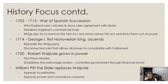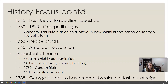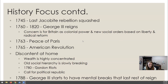Walpole refuses to go to war again against France and Spain, and in 1742 he falls out of favor. He is succeeded by William Pitt the Elder, who appeals to everyone's patriotism and expands power and commerce overseas. In 1745 the last Jacobite rebellion is squashed — Scotland is subdued — and it has a huge impact on Scotland, though we won't get to go into that much.